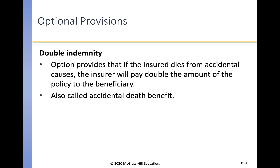An insured may also choose double indemnity, which provides that if the insured dies from accidental causes, the insurer will pay double the amount of the policy to the beneficiary. This is also called an accidental death benefit. Of course, it will cost more to get double indemnity coverage.